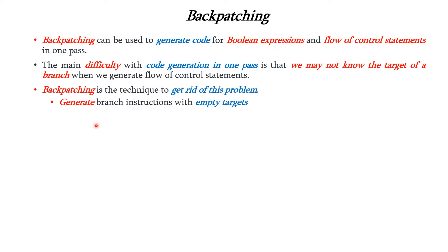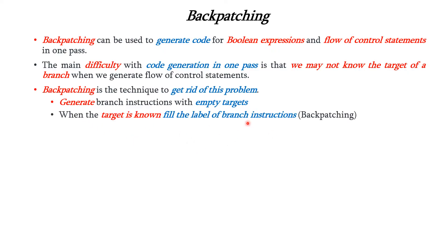The idea is that initially it will generate the branch instruction with empty targets. Later, when the target is known, it will fill the label of the branch instructions — that is what is called backpatching. Patching means attaching the labels; back means we are attaching the labels after the target is known.